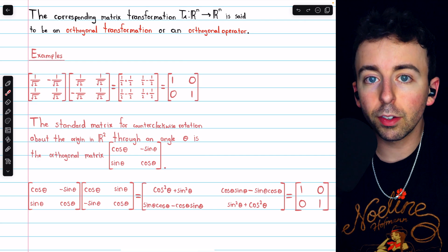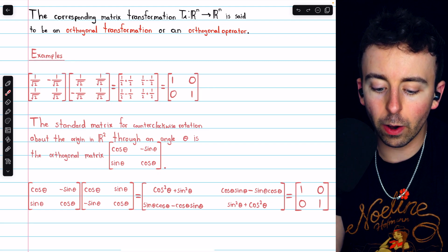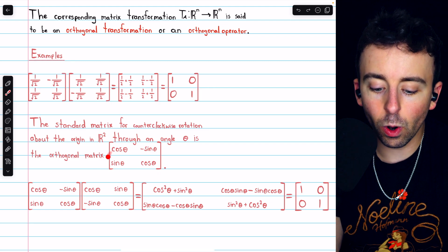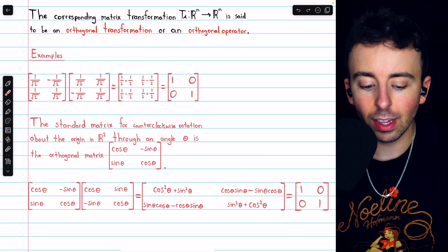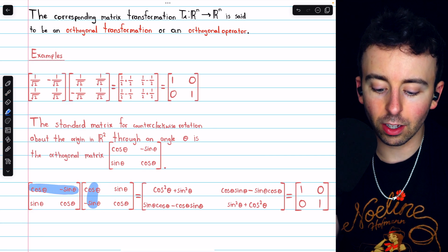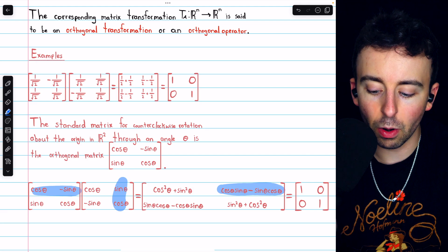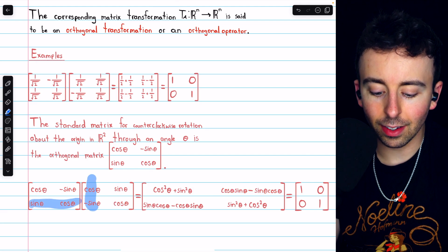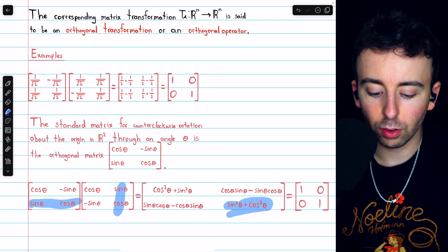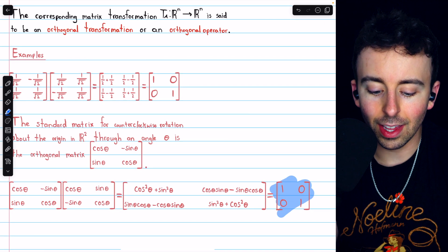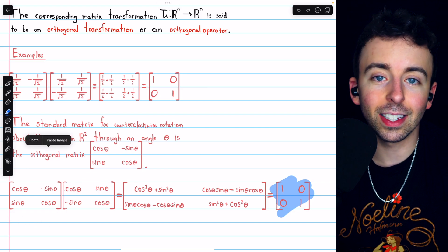Here's another example of an orthogonal matrix you should be familiar with. The standard matrix for counterclockwise rotation about the origin in R² through an angle theta is an orthogonal matrix. We can see it's orthogonal because when we multiply it by its transpose, we get cosine squared plus sine squared, which is 1, then cosine times sine minus sine times cosine, which is 0, and similarly sine squared plus cosine squared equals 1. So we get the identity, confirming it is an orthogonal matrix.